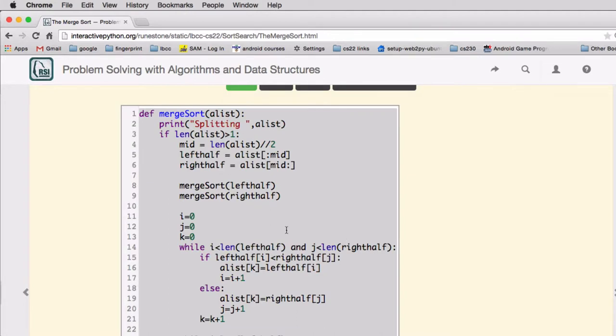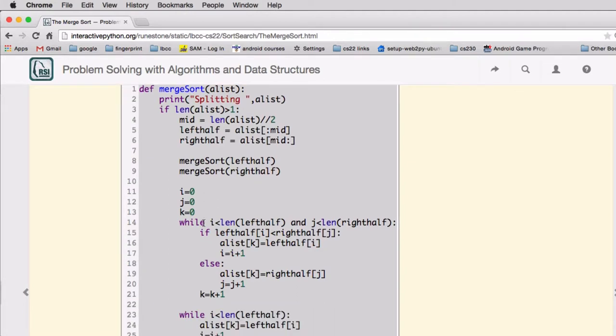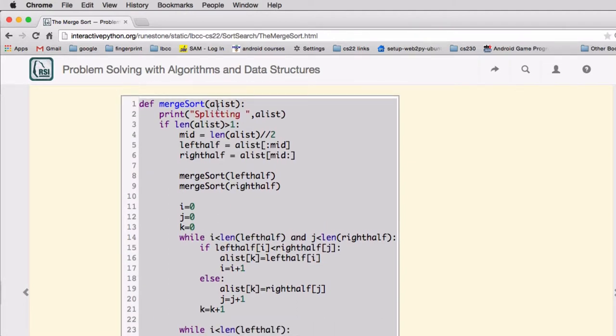And so you can see the code. There's a lot of code here. But basically at the very beginning you give it a list. If the list is greater than one, it will get the midpoint and then use the split operator in Python and then it calls merge sort on the left half and right half so it recurses.